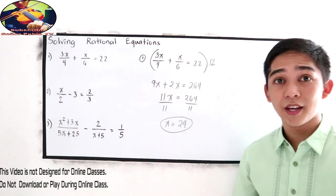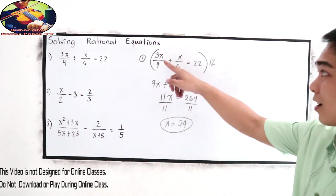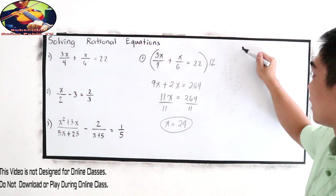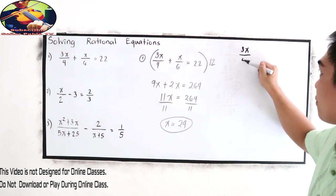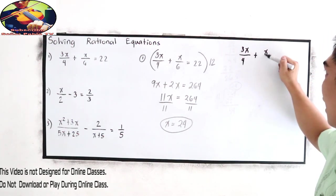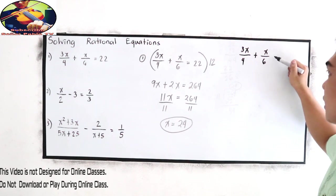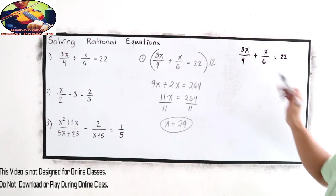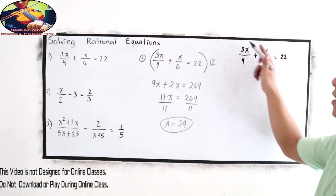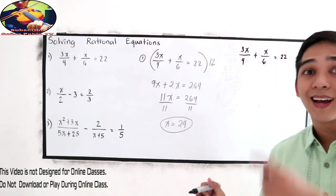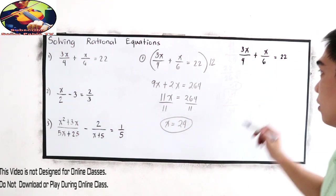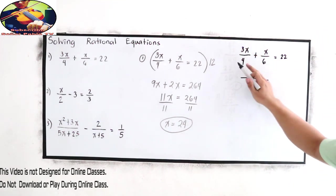Our second method is, copy the given, 3x over 4 plus x over 6 is equal to 22. Make the left side of the equation a single expression. So get the LCD.